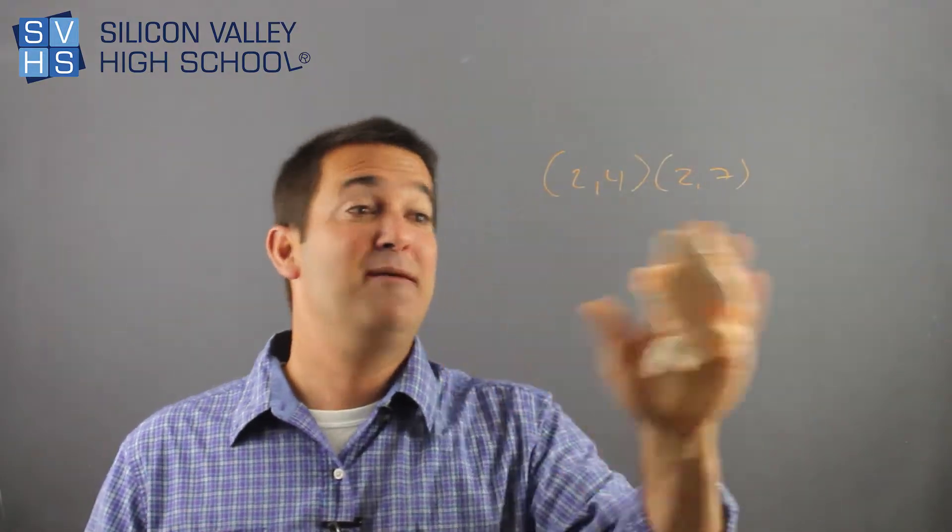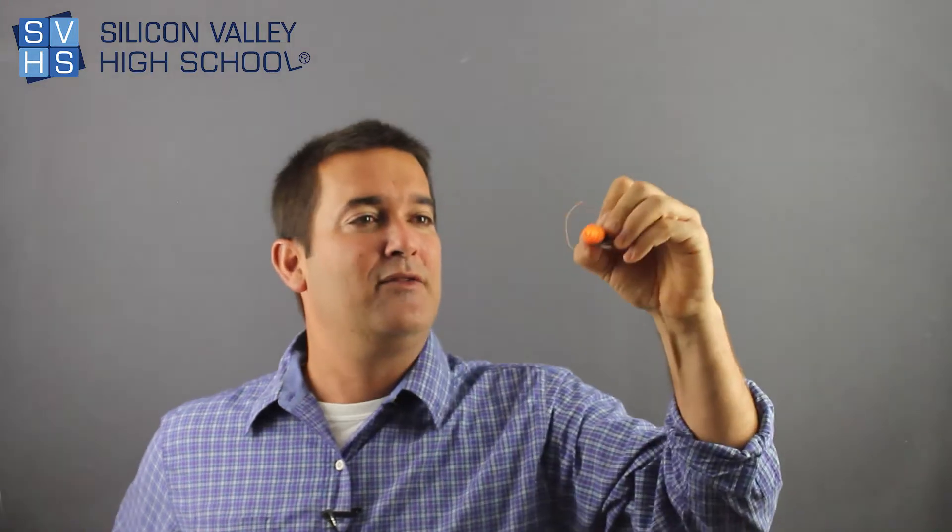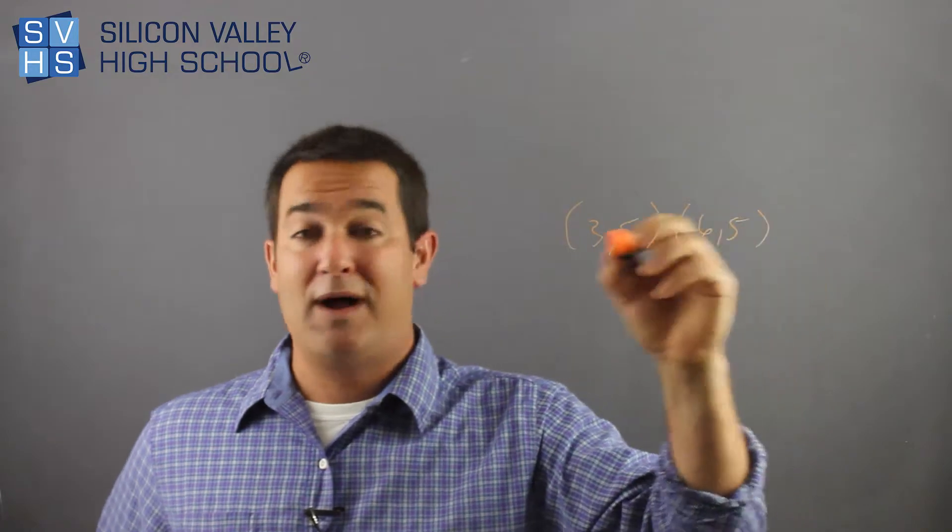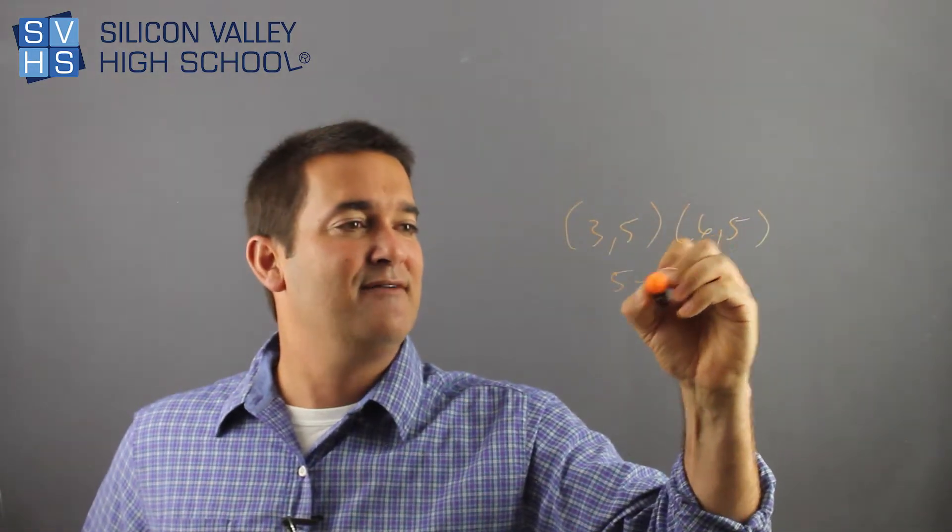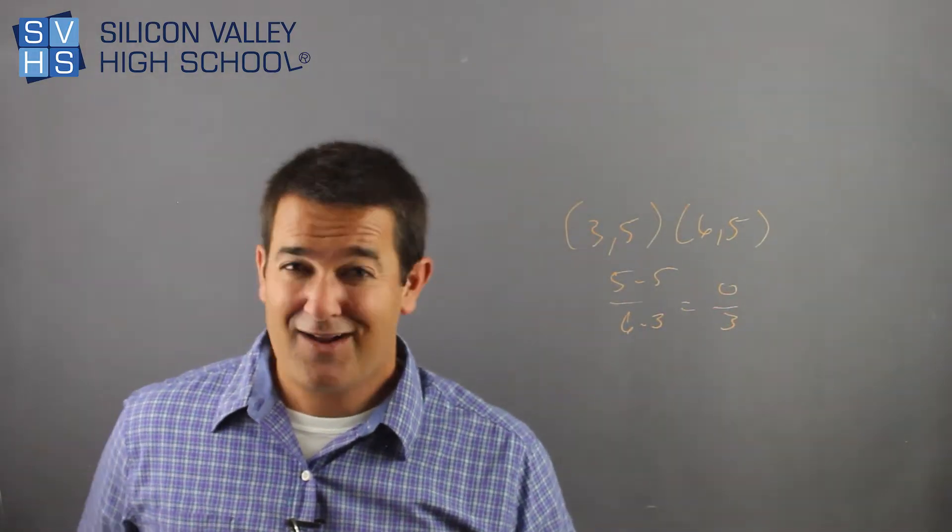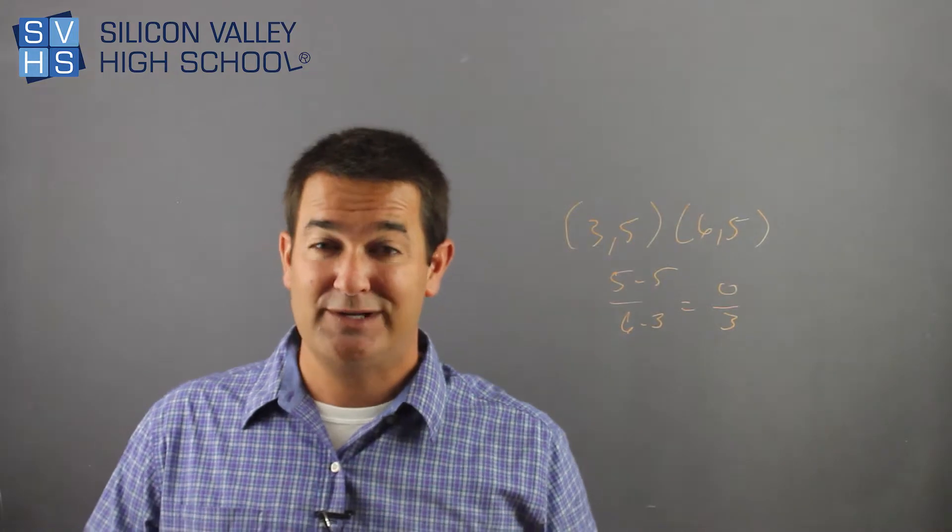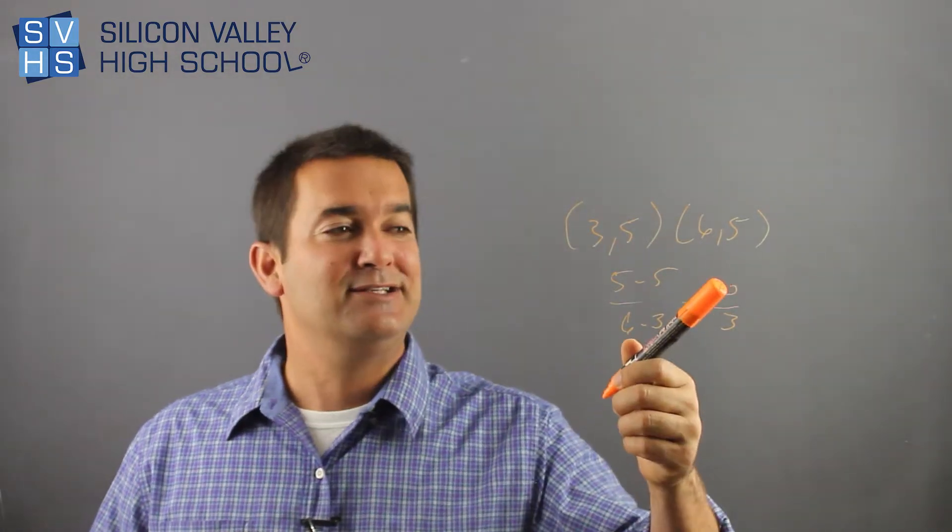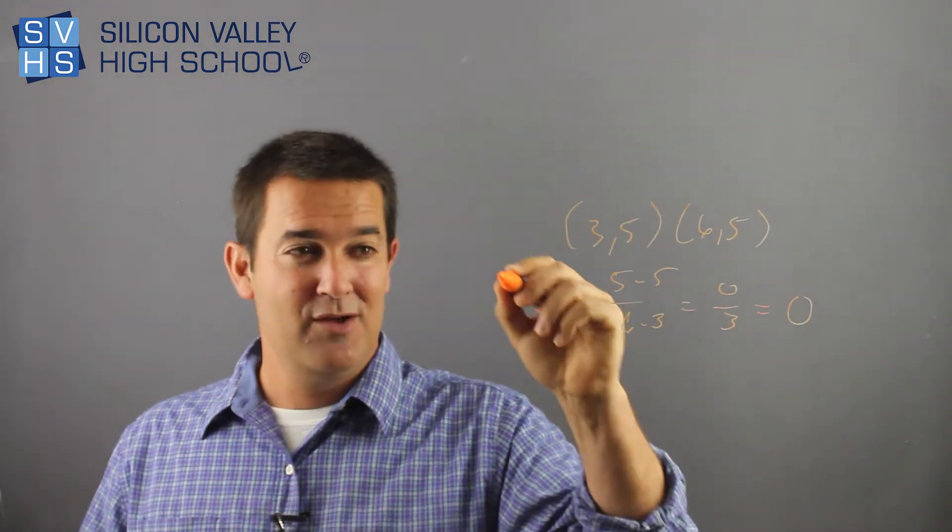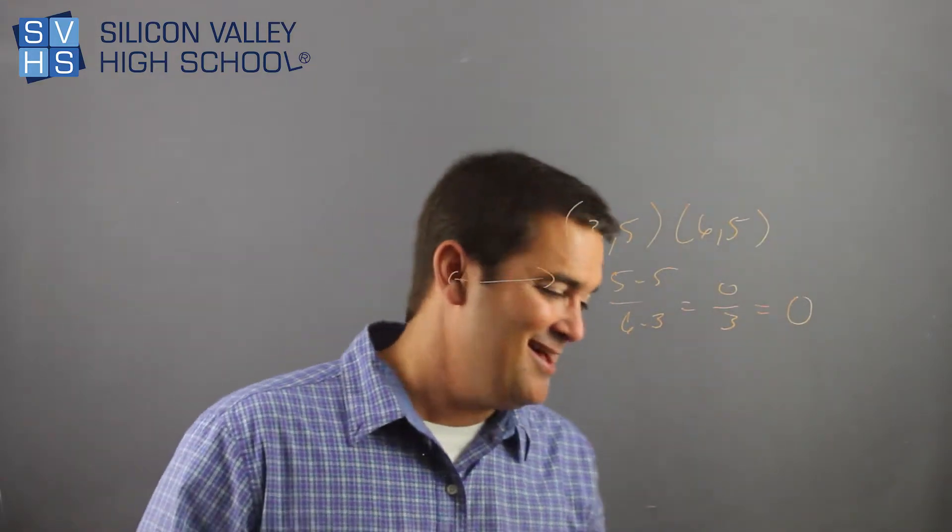Now I'm going to do a 0 slope, maybe. I don't want to spoil it. Let's do this one. 3, 5, and 6, 5. Y minus Y, 5 minus 5, over X minus X, 6 minus 3, that'd be 0 over 3. This is not undefined. 0 can be divided by 3. This is solvable. Do it in your calculator. You will not come up with undefined. 0 divided by any number is 0, so the slope of this is 0, which means I know it must be a horizontal line. That makes sense. Don't lie.